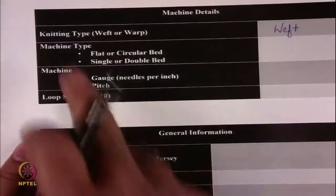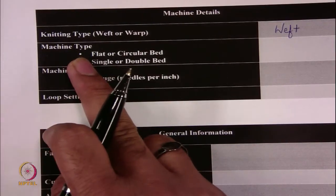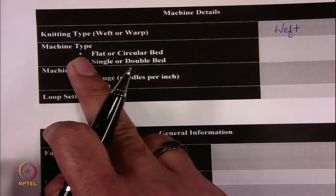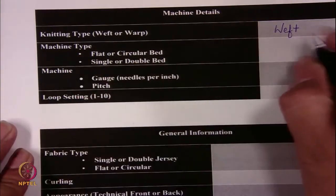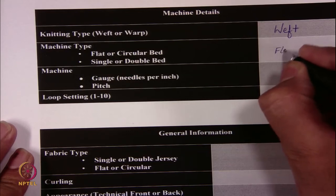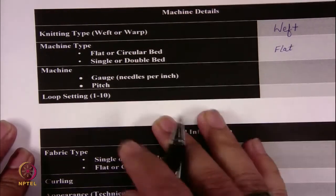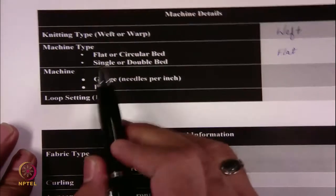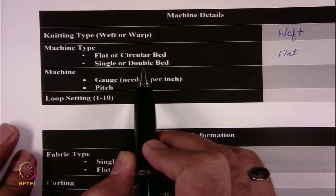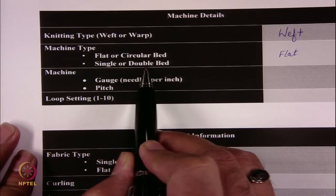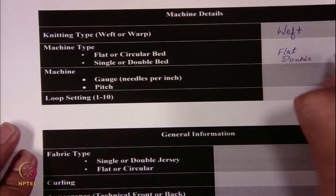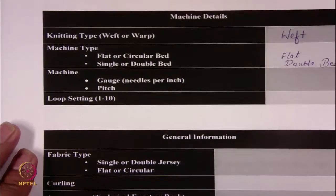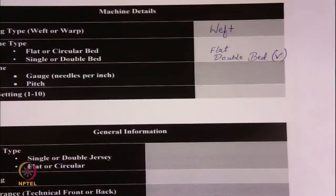Now the machine type. This machine I have shown you was used in this particular fabric production. This is a flat bed knitting machine. The next thing about machine type is whether it is a single or double bed category. This is a V bed machine which has a double bed — so this is made on a double bed machine. The machine was V bed type.